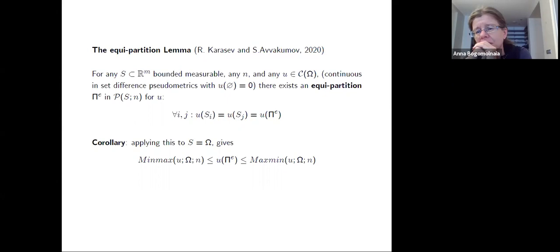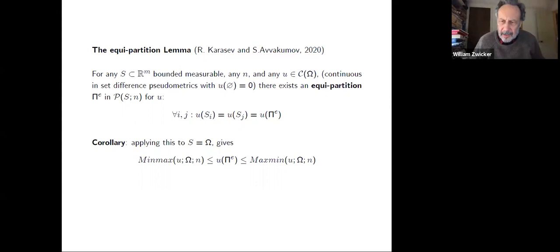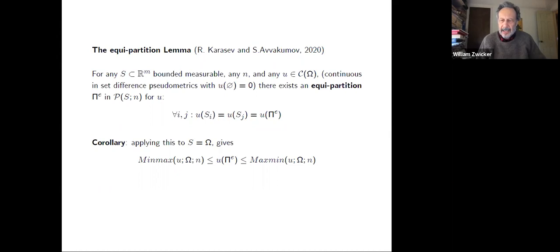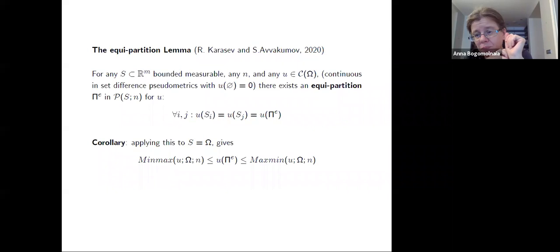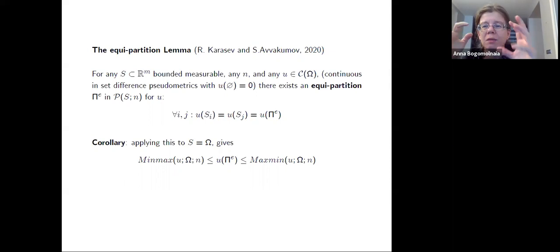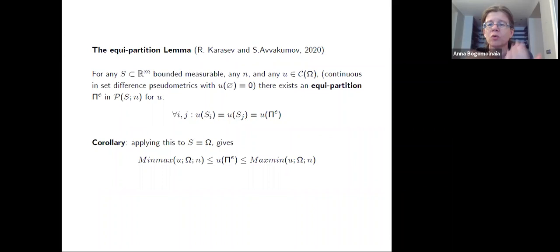Follow-up question: Have you considered utilities that are the minimum of two additive measures — a simple, controlled failure of additivity? Answer: No, because the main interest was in pushing toward non-additive and especially non-positive preferences, mixtures of good and bad goods. The minimum of two additive measures wasn't considered, and there's no clear intuition about how it would behave even with positive utilities.